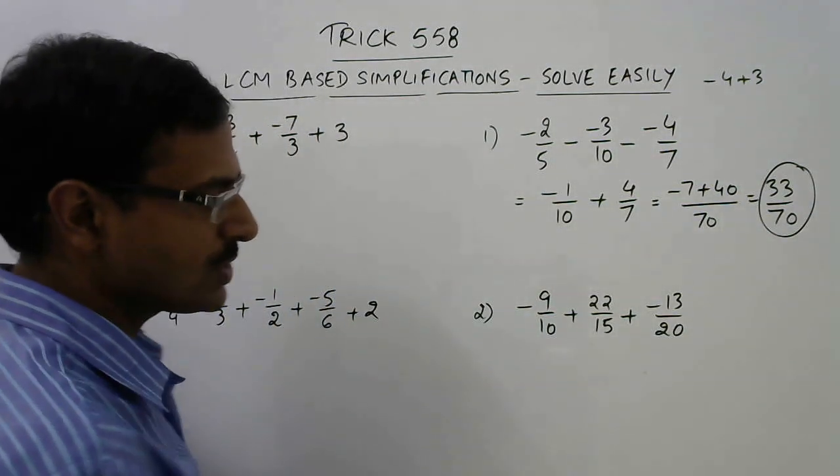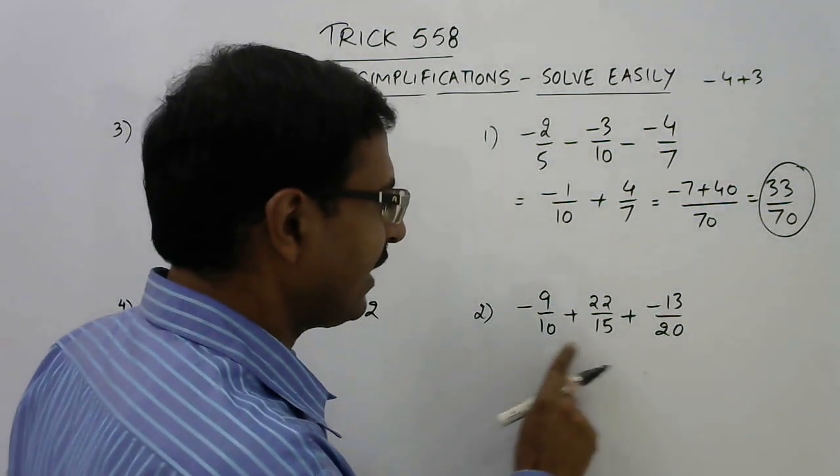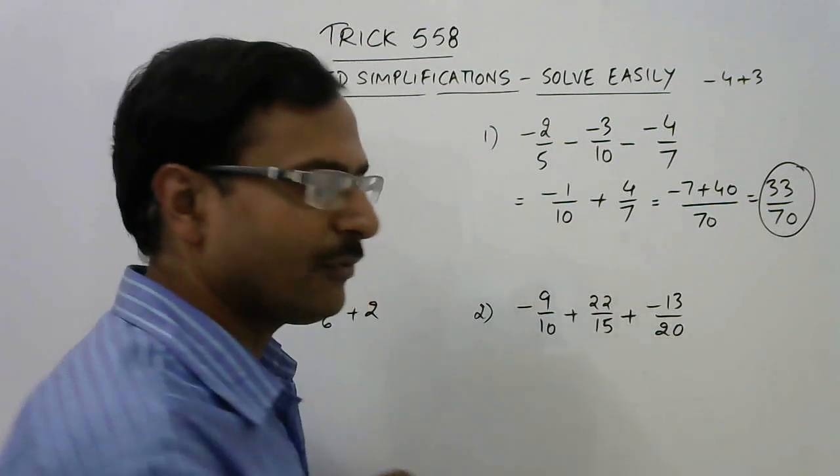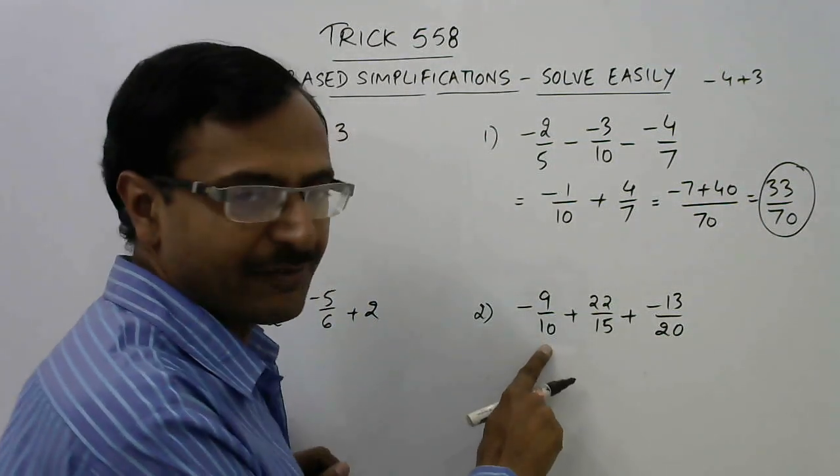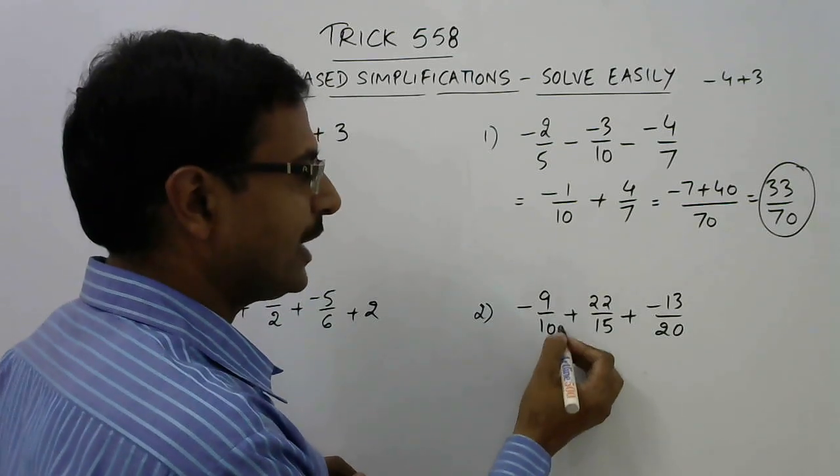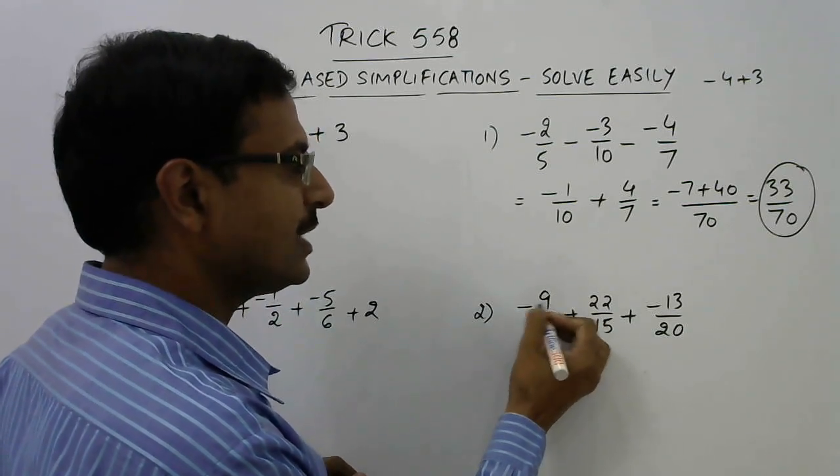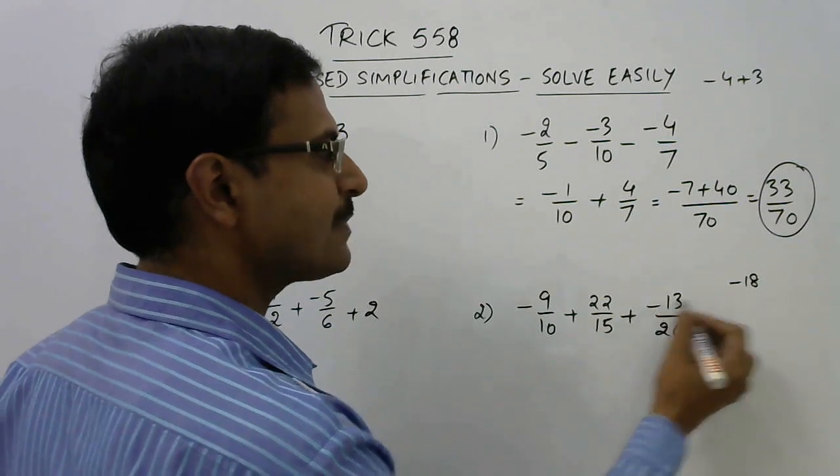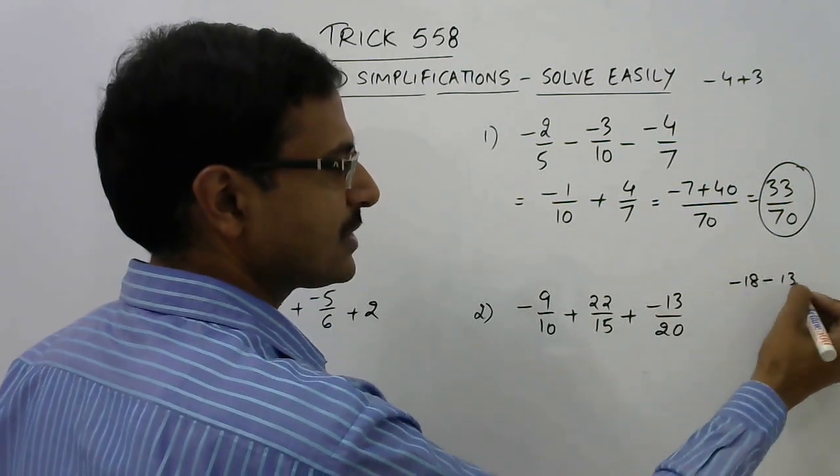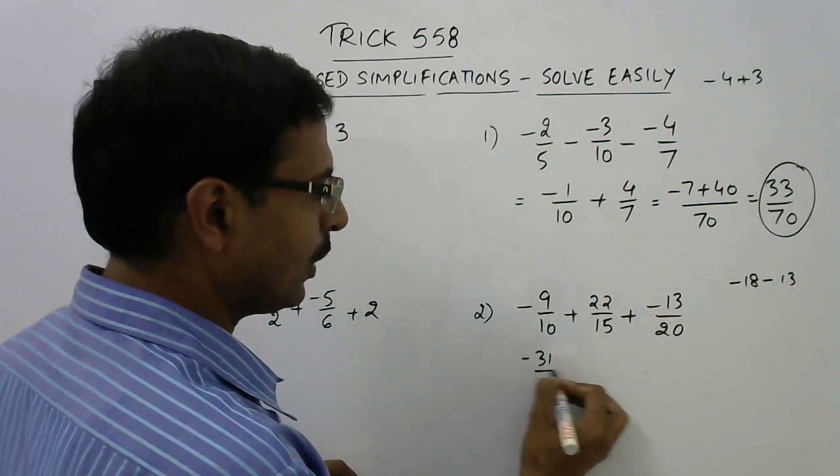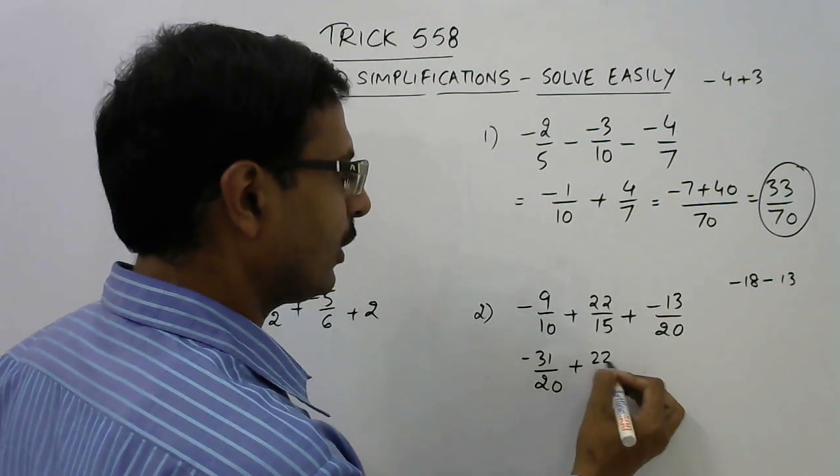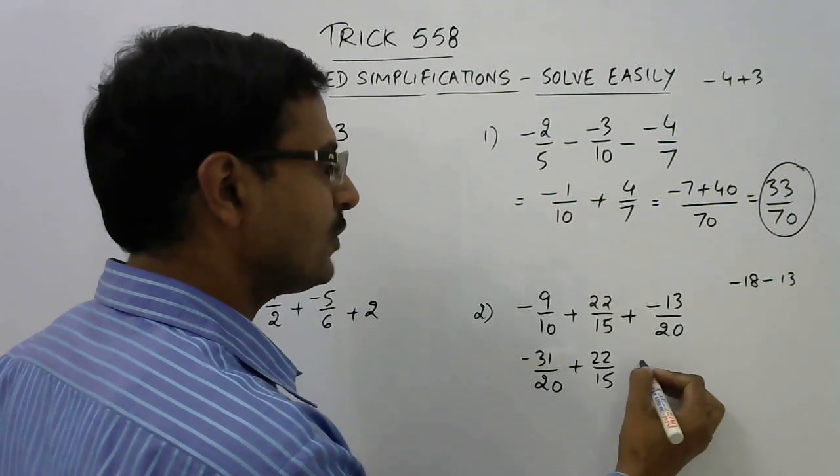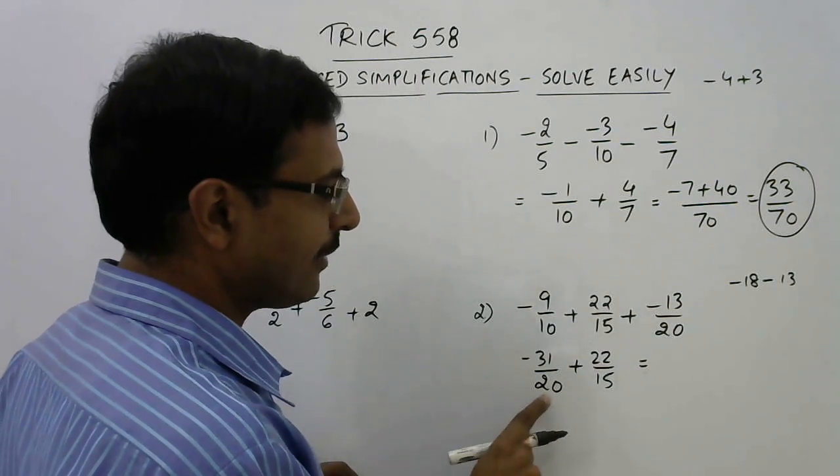Likewise, you have this question. See, I will not take 10 and 15 or 15 and 20 for the first step. I will take 10 and 20. Why? Because 10 perfectly divides 20. Now, 10 into 2 is 20, so minus 9 into 2 is minus 18 and plus minus is minus 13. This gives us minus 31 upon 20 is the LCM and finally, we have 22 upon 15. So, how do we solve these? 15 does not divide 20.